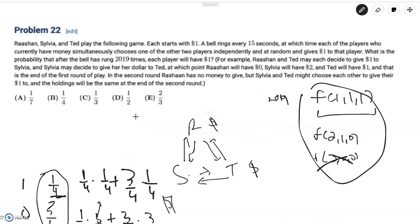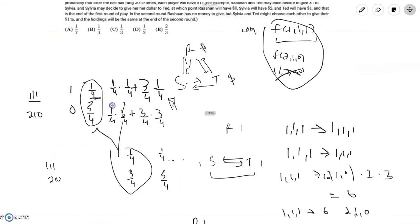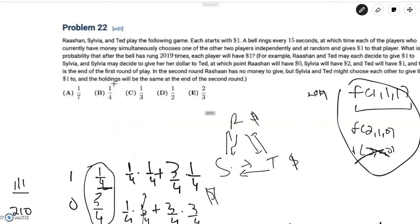And the problem asks, what is the probability that each player has one dollar, which is after 2019 times, which is just p of one one one. And we just showed here that it's always equal to one fourth. So the answer is one fourth, which is b, and we are done.